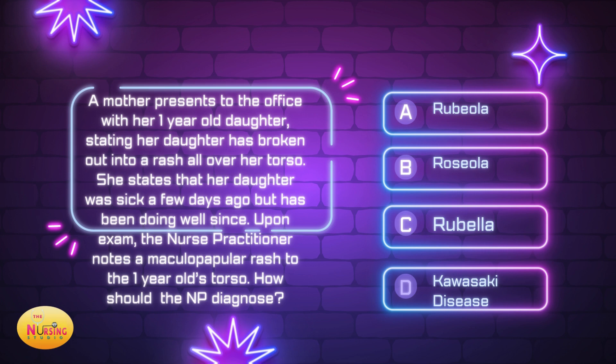Would it be A, rubeola? No, we can eliminate that. Rubeola is the actual measles — Koplik spots and the more blotchy rash are the key identifier for that one. Is it B, roseola? Yes, it is. Roseola's classic presentation is a macular papular rash, but the key classic thing is they get this rash after they've had a high fever a few days prior. The child was sick, may have had a high fever, then boom — they end up with this macular papular rash all over them. That is roseola.